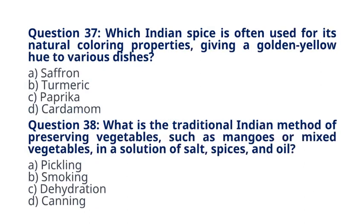Question 37. Which Indian spice is often used for its natural coloring properties, giving a golden-yellow hue to various dishes? A. Saffron. B. Turmeric. C. Paprika. D. Cardamom. The correct answer to question 37 is option B. Turmeric. Explanation. Turmeric is widely used in Indian cooking not only for its flavor but also for its natural coloring properties.